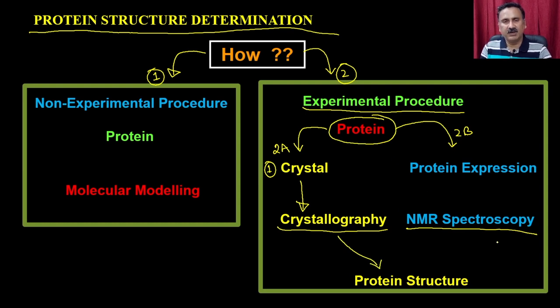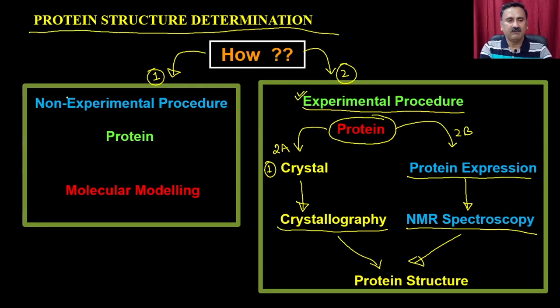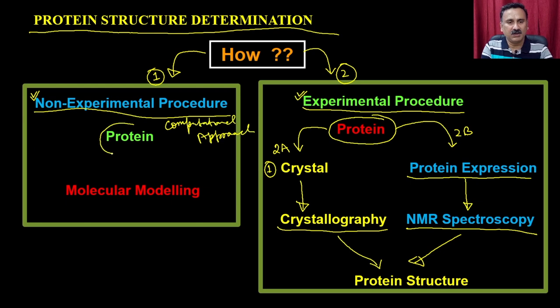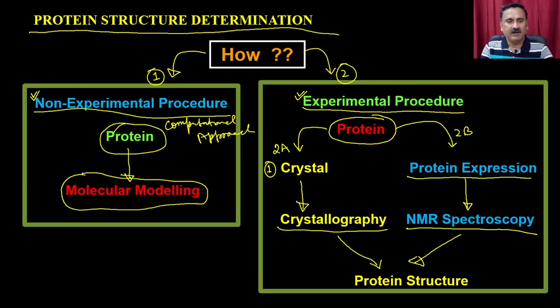Similarly, in the case of NMR spectroscopy, you can express the proteins and then record the NMR spectra and solve the structure of the protein with the help of NMR spectroscopy. Both of these experimental methods are going to give you the protein structures. We are going to first discuss the experimental method and then focus on the non-experimental method. In the non-experimental method — these are called computational methods — you use the protein sequence and different computational tools to do molecular modeling.